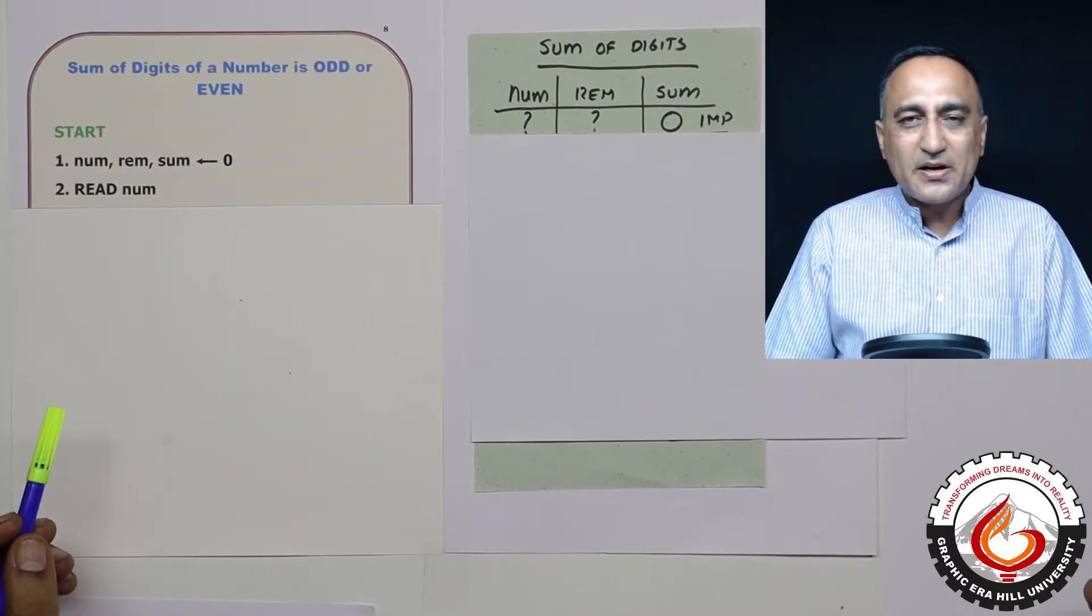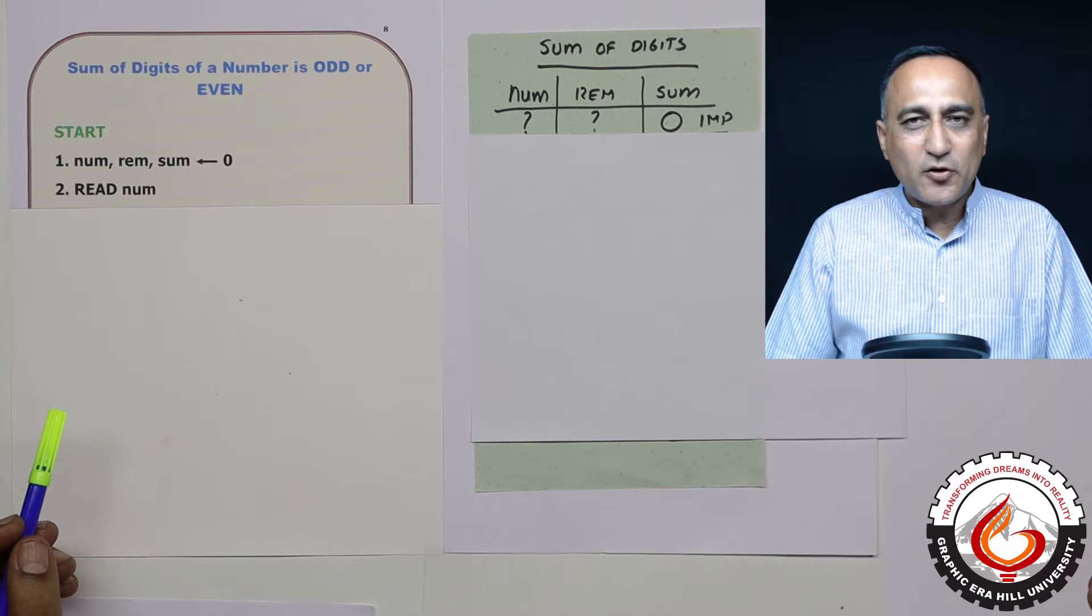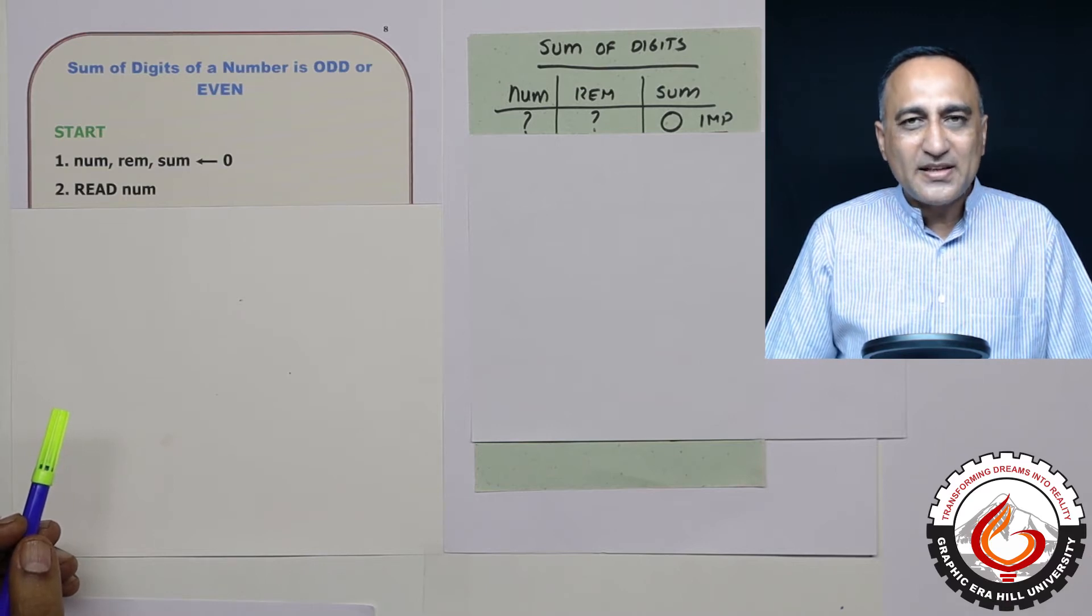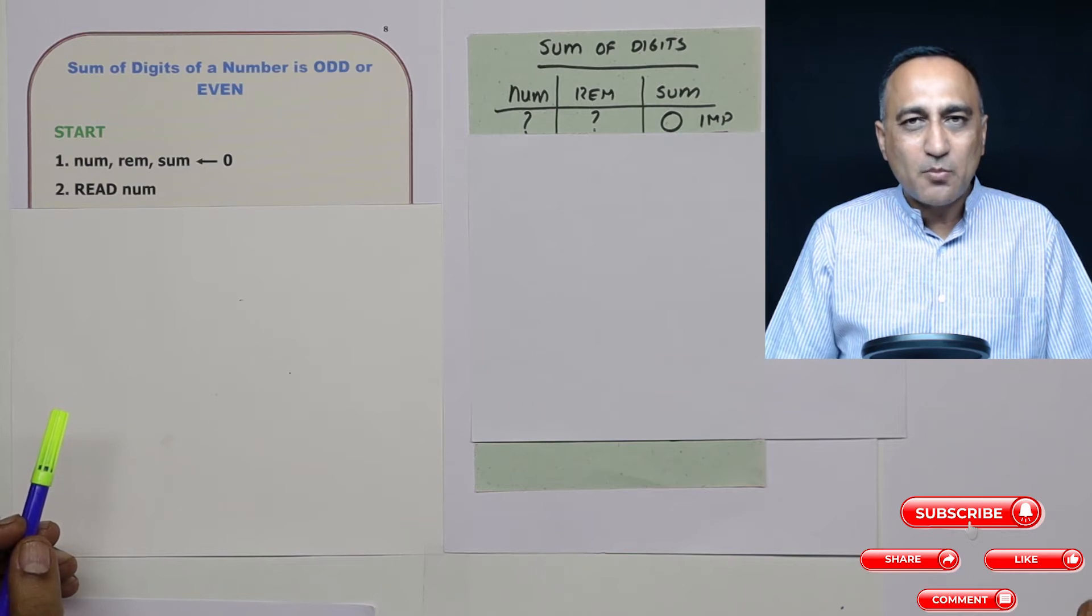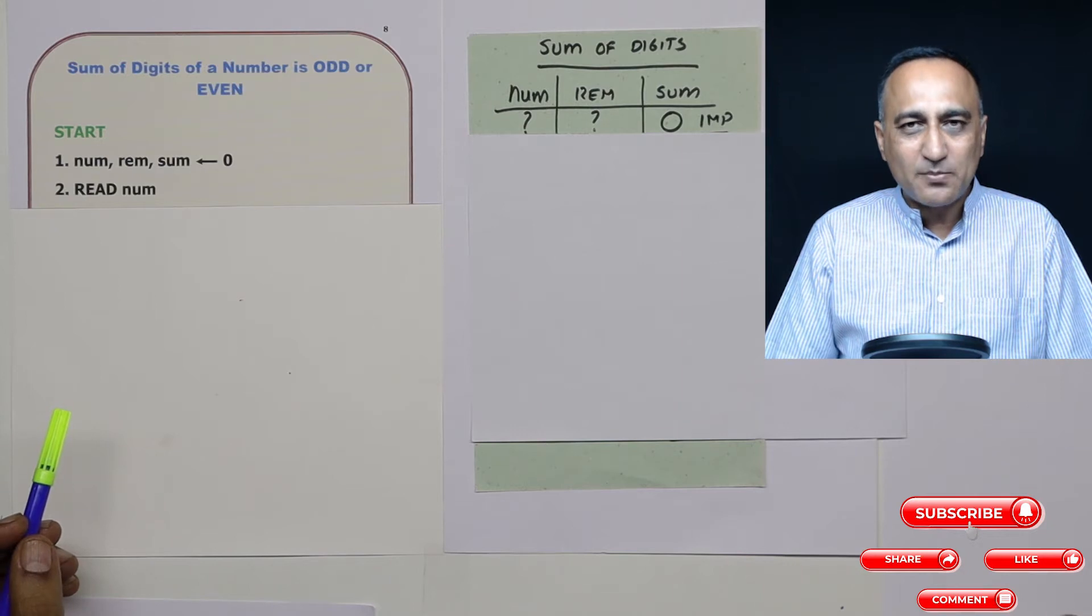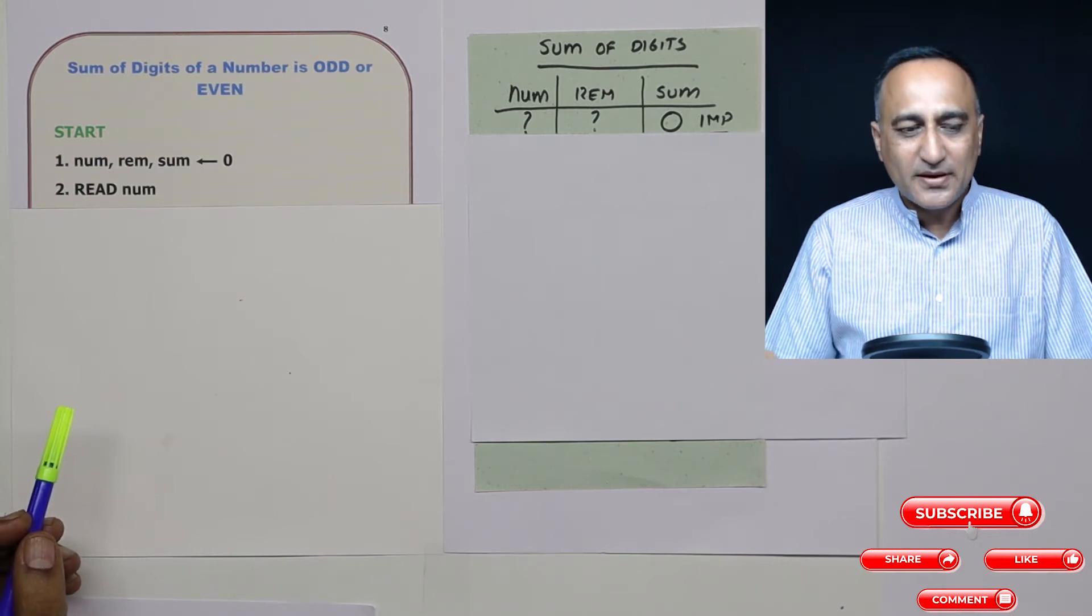And then a variable called remainder. Because every time a number is given, I have to do the mod and the division operator. Remainder will hold the result of the mod operation and division will help me get rid of the rightmost digit at that point of time.